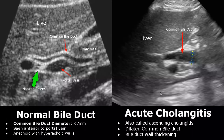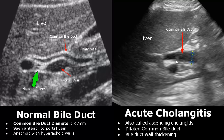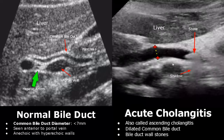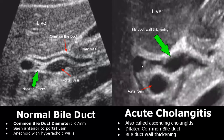Cholangitis is the inflammation of the bile ducts. In acute cholangitis, also called ascending cholangitis, the common bile duct is dilated and the bile duct walls are also thickened. In this image we can see a stone in the bile duct with posterior shadowing causing inflammation, and the bile duct is dilated. Here we can see thickened walls of the bile duct — in normal wall thickness these internal echoes are not seen, but in thickened walls they can be seen inside the bile duct.